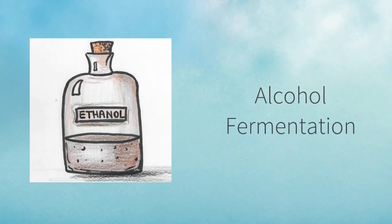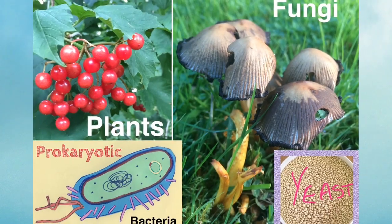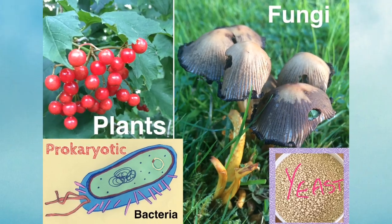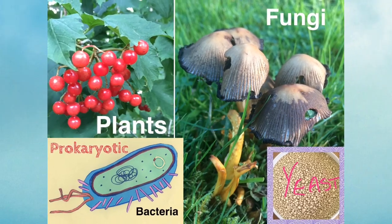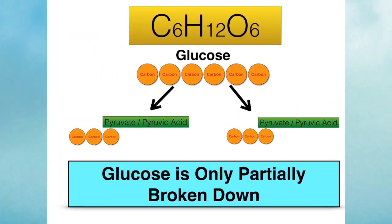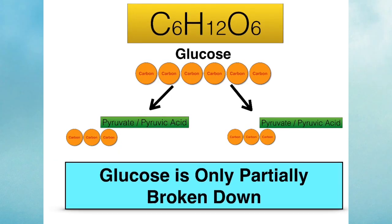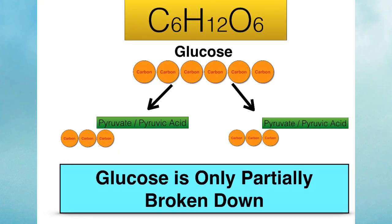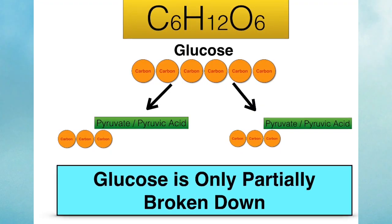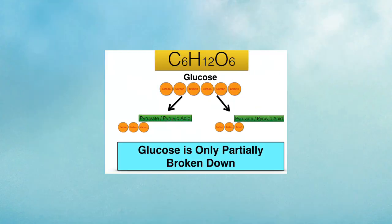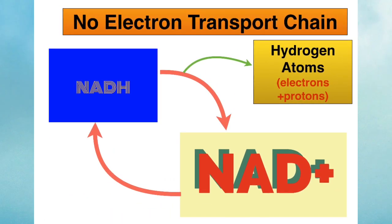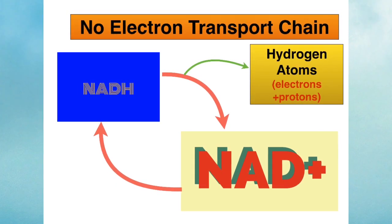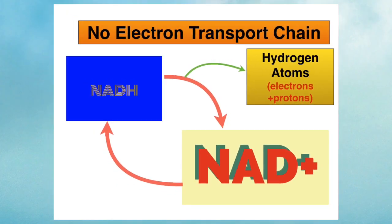Now let's talk about alcohol fermentation. Alcohol fermentation is carried out by some types of fungi — for example yeast — and also by some plants and some bacteria. It all begins with glycolysis, where the six carbon glucose is partially broken down to form two pyruvate molecules or two pyruvic acid molecules. We encounter the same problem: two NADH molecules are generated but there is no electron transport chain to receive those electrons.